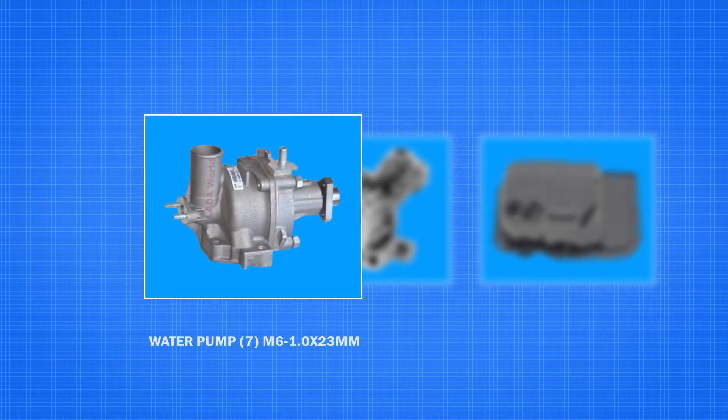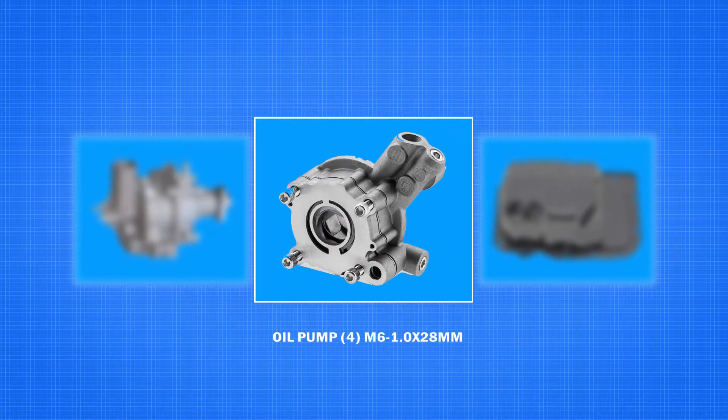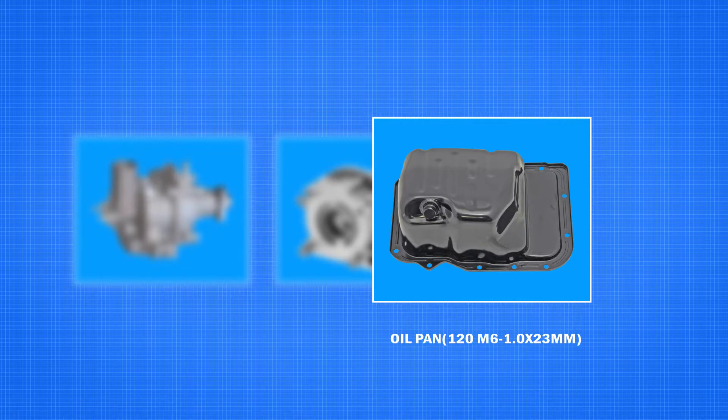The powertrain area has many different components where Taptide products are used. Manufacturers have used Taptide products to assemble components onto the exterior and interior of aluminum engines.